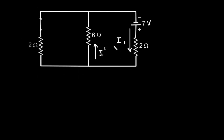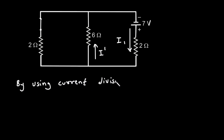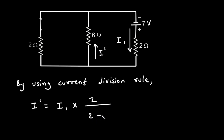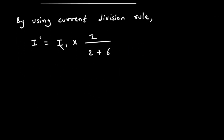Let's find the value of I prime by using the current division rule. By using current division rule, I prime is equal to I1 multiplied with the opposite branch resistance. The opposite branch or parallel branch to this 6 ohm resistor is the 2 ohm resistor. So it will be I1 multiplied by 2 ohm divided by (2 + 6). We don't know the value of I1 yet, so first we have to find it.